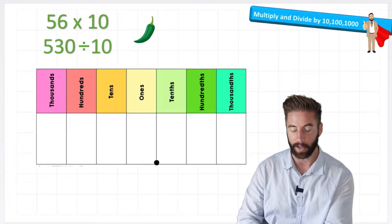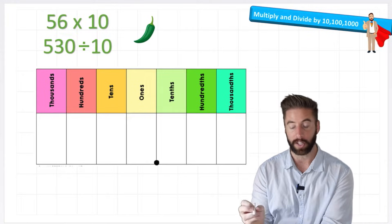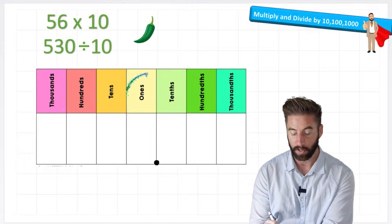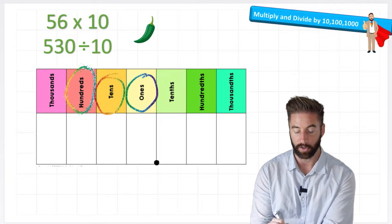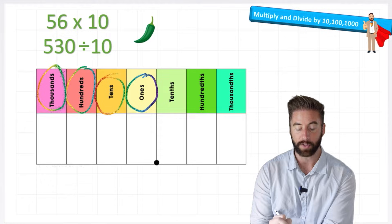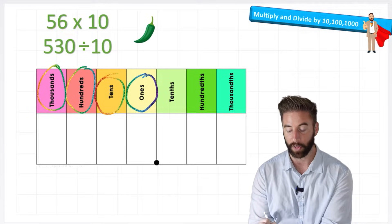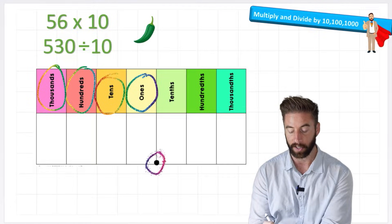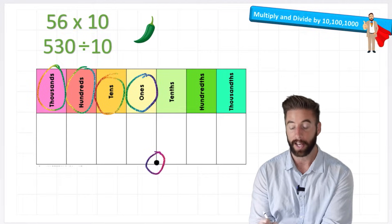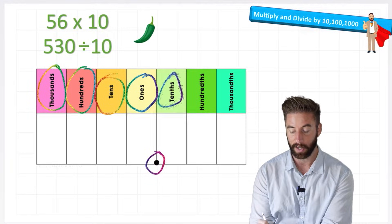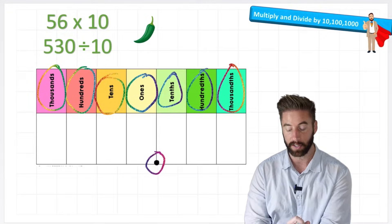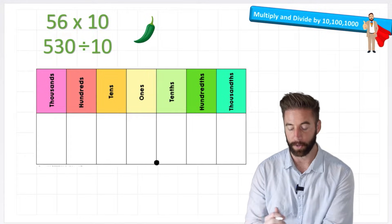I've got one here for us. We can see our 1s, our 10s, our 100s and our 1,000s. We've actually got things below the decimal as well. This is our decimal line and then we have 10s, 100s and 1,000s. So how can this help us?